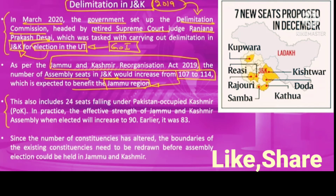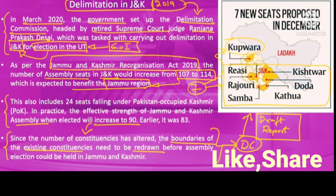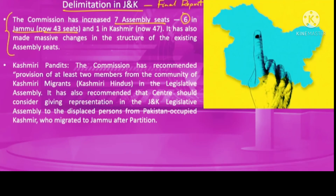With this, the effective strength of the J&K assembly went up to 90, and as the number of constituencies increased, the boundaries of existing constituencies had to be redrawn. Earlier this year, the delimitation commission submitted its draft report, suggesting that out of seven new constituencies, six would be for the Jammu region — as visible on the map — while only one new constituency would be created for the Kashmir region. The final report has now confirmed these changes.